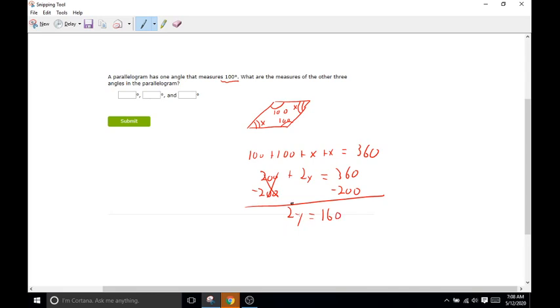So we have 2x equals 160. And then to get the x by itself, we are going to divide both sides by 2. And x is going to equal 80, meaning each of these angles are going to be 80 degree angles. So when it asks for the three missing angles, we're going to say 100 and 80 and 80.